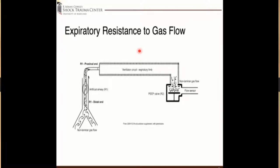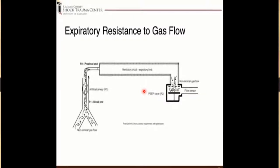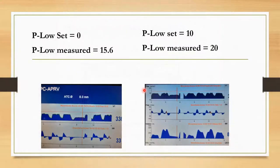If you set the P-low, you have to squeeze through that expiratory valve, which lowers tidal volumes and causes trouble with minute ventilation — leading people to say APRV requires permissive hypercapnia. This was an issue with the original way of setting P-low. With P-low set at zero, we get unrestricted flow during exhalation.